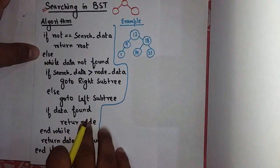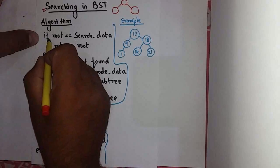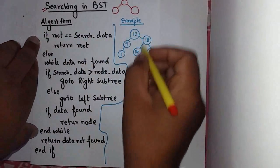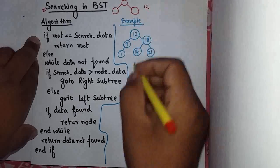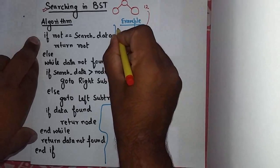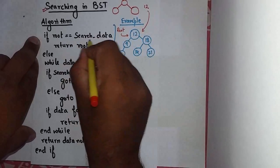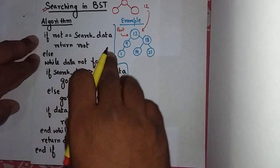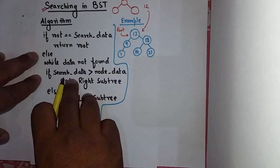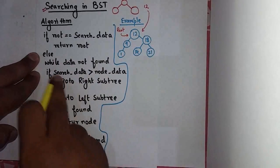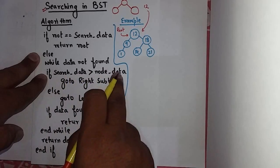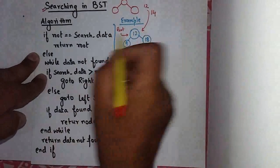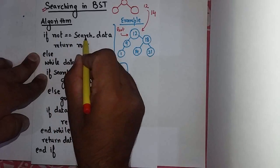We will study a very small example of searching algorithm. Algorithm says what if root is equal to search data. Suppose in this example if I have to search 12, we are going to search number 14.